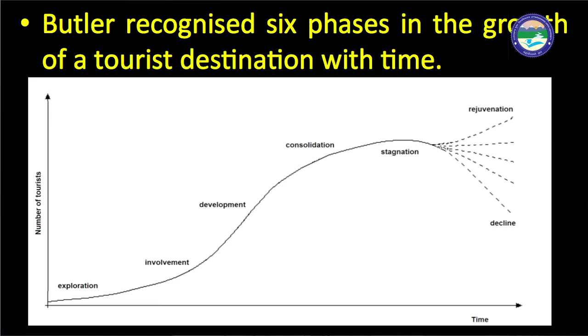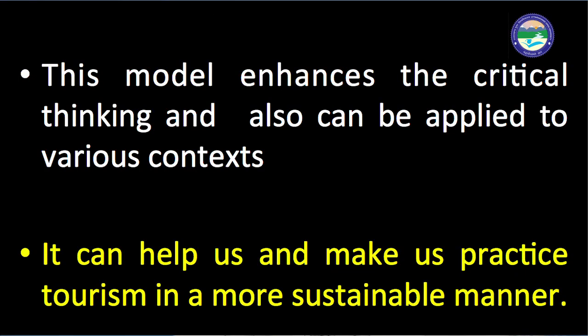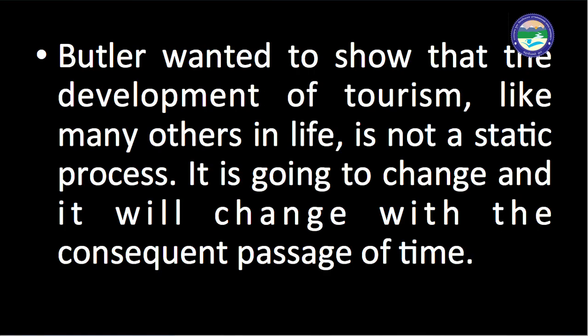The various stages shown in the graph are: exploration, involvement, development, consolidation, stagnation, and then it is decided whether the tourism product will either rejuvenate or decline. This model enhances critical thinking and can be applied to various contexts, testing the stakeholders' creativity level. It can help practice tourism in a more sustainable manner so that resources may be allocated efficiently. Butler wanted to show that the development of tourism is not a static process — it will change with the passage of time.